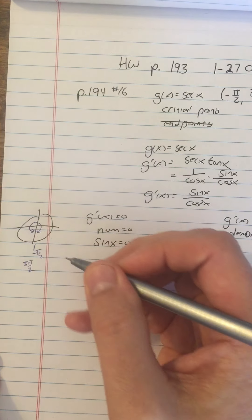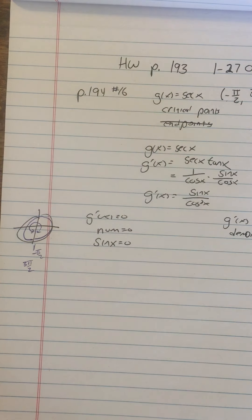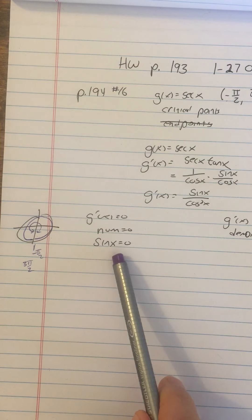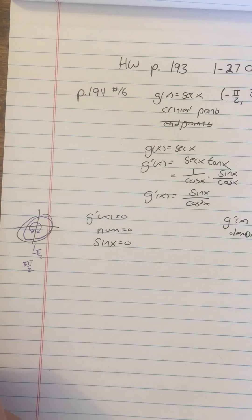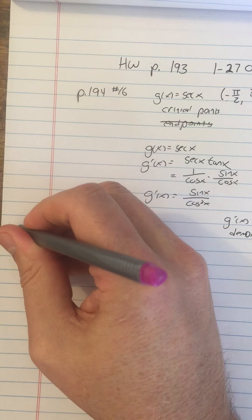We're doing everything from negative pi over 2 around to 3 pi over 2. The question is, where is the sine equal to zero on that interval? The sine is the y-coordinate. So the two places where the y-coordinate is zero are here and here. That is zero and pi.